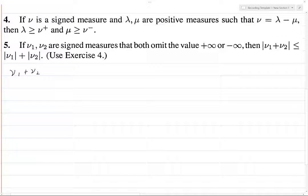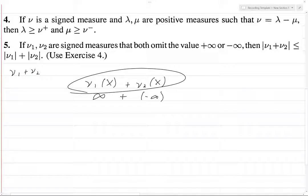But we don't know per se that we can actually write this thing, because what if we take ν₁ of our space X and we take ν₂ of our space X, and this is infinity and this is minus infinity, and now we've just written down something that's not defined.